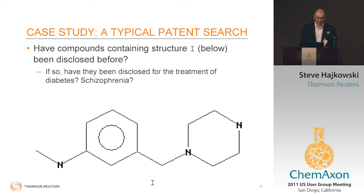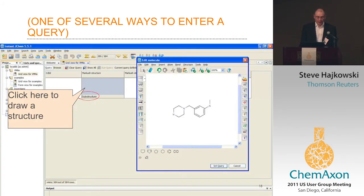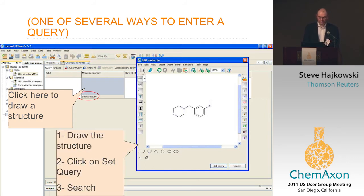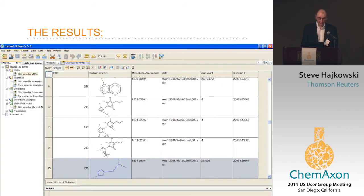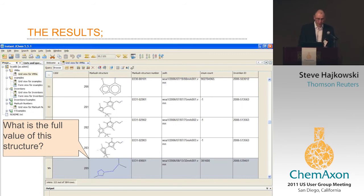We want to know if it has been disclosed before, and if so, has it been disclosed for the treatment of these diseases — diabetes and schizophrenia. We've moved into the Instant JChem area with a set of Markush structures to search from. We can go in and use the structure drawing part of Instant JChem, draw the structure we want, and have it searched against the collection of Markush structures — in this case the collection that Thomson Reuters has curated. We come through into a set of hit Markush structures, and the software tells us that within these Markush structures and patents there's a match against the query structure.